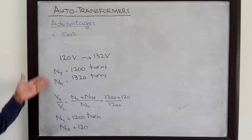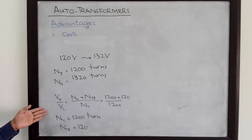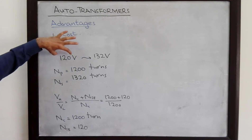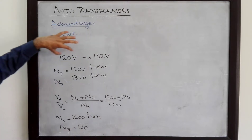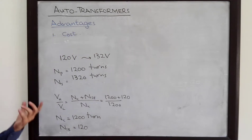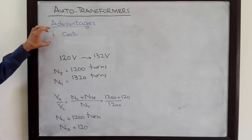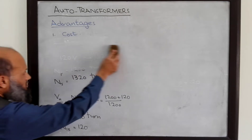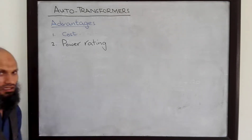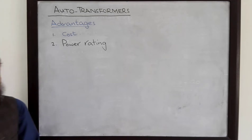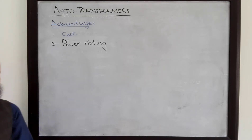This advantage is more apparent when the required amount of step-up or step-down voltage is very small. So one advantage is the reduced cost of the auto transformer. Another very important advantage is the apparent power rating. A conventional transformer, if utilized in auto transformer configuration, has its power rating increased.